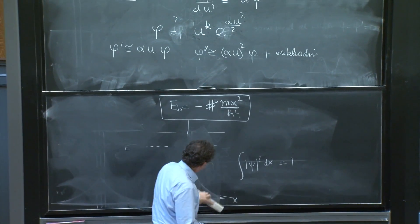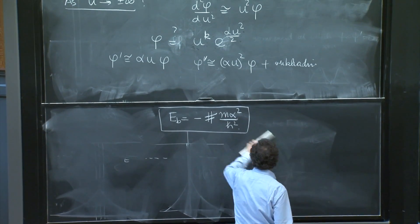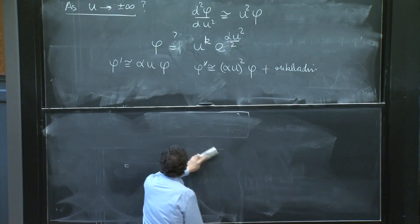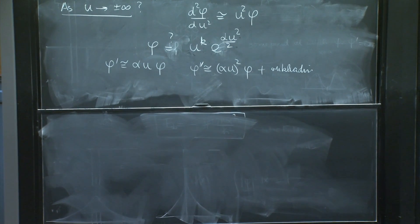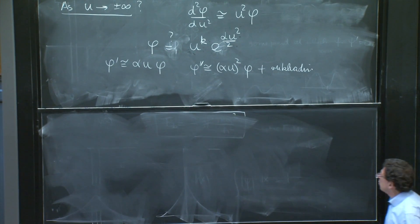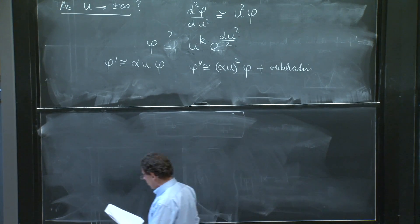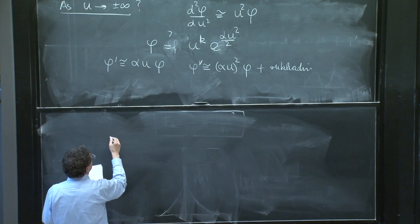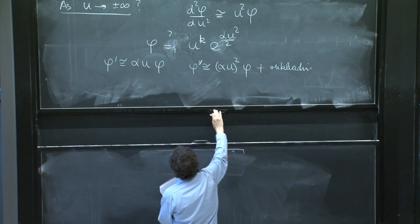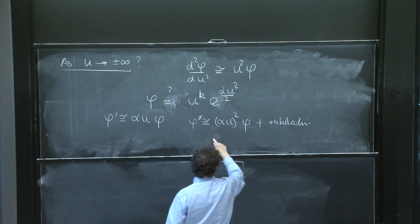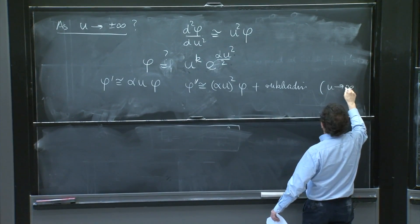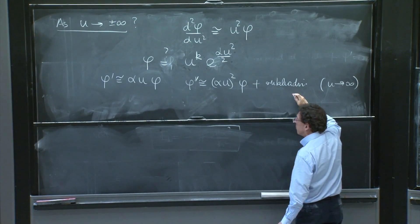Alpha is plus minus 1. And those are likely to be approximate solutions as x goes to infinity. So we could expect solutions for alpha equal 1. And I will write it. And all this, I should say, is always as u goes to infinity.